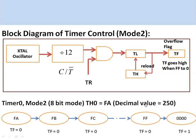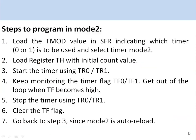In the timer 0 mode 2 example (8-bit auto-reload mode): if you load the value 250 in the TH0 register, this value is automatically reloaded into TL and it starts incrementing. When TL goes from 0xFF to 0x00, the timer overflow bit is set.